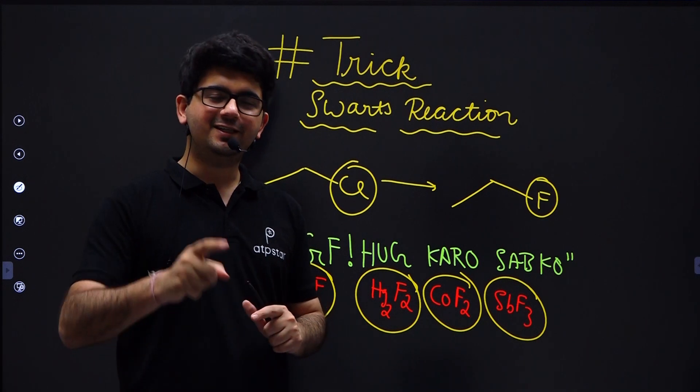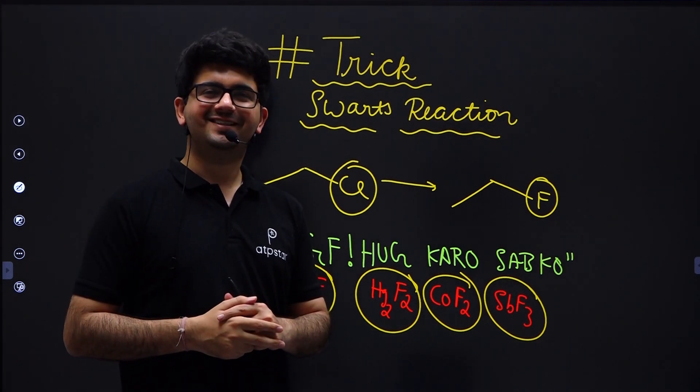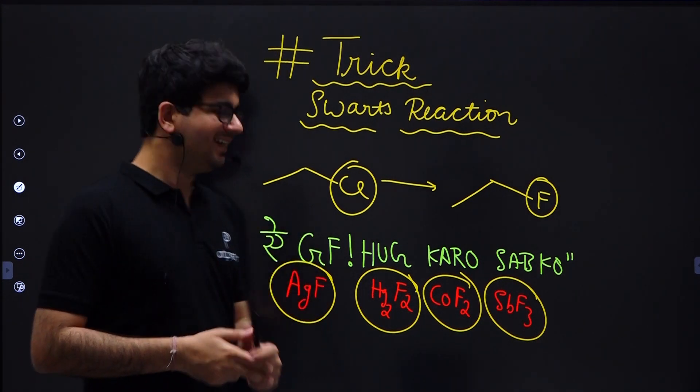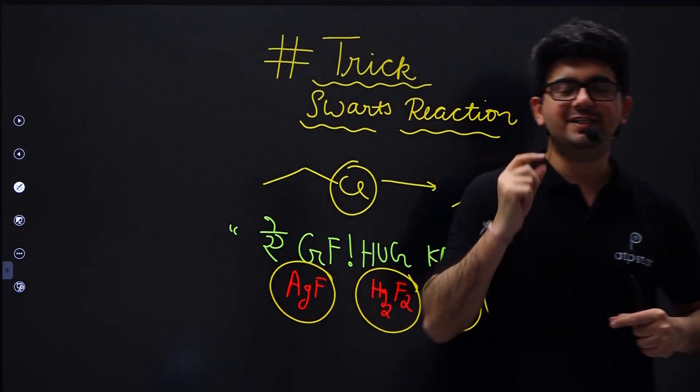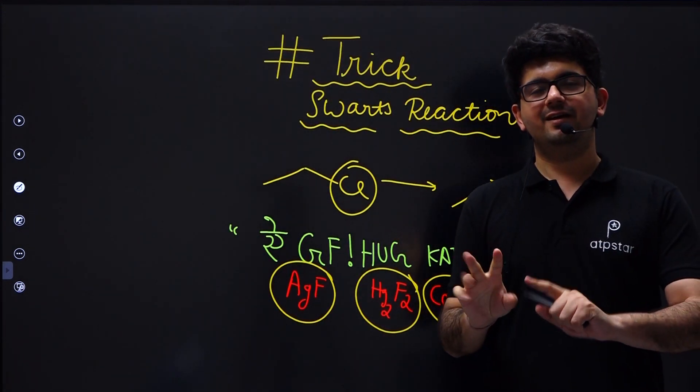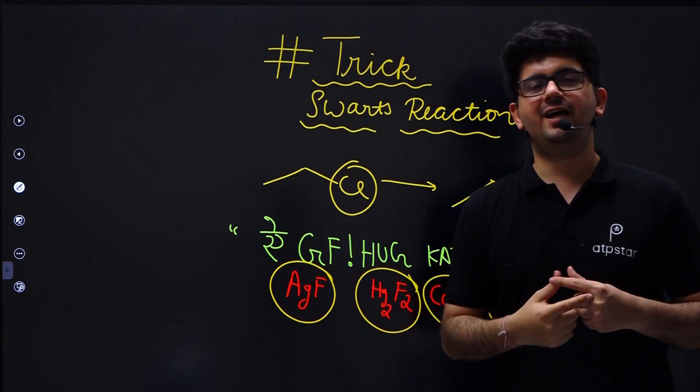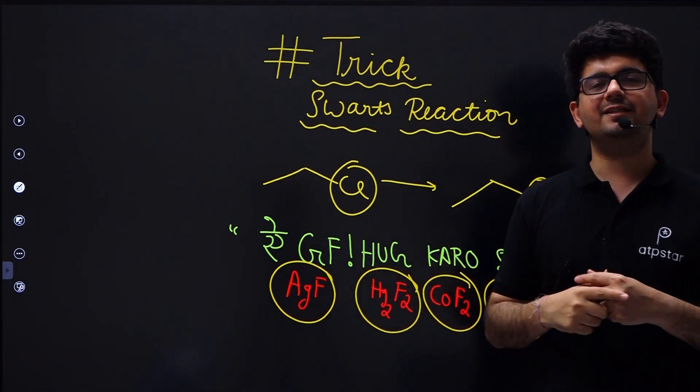So everyone say - AgF hug karo sab ko. Got it guys? So try to remember on this basis. From AgF hug, what comes? Hg2F2. From karo, what comes? CoF2. From sab ko, what comes? SbF3.